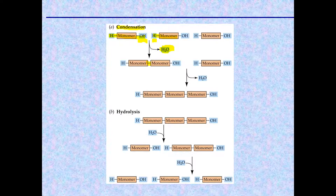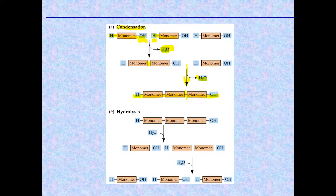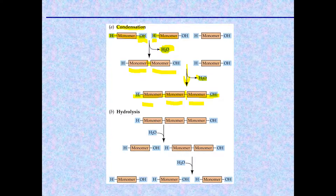As another monomer is added in another condensation dehydration reaction, water is given off, another bond is made, and you have what's called a trimer — because there are three monomers connected by covalent bonds. When there are two monomers linked, it's called a dimer.